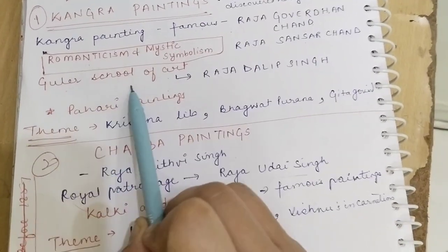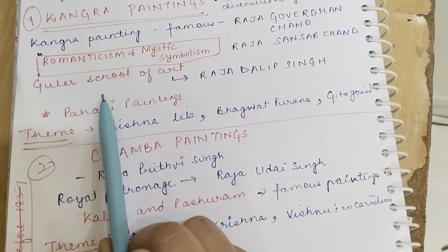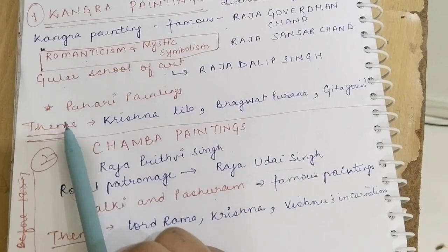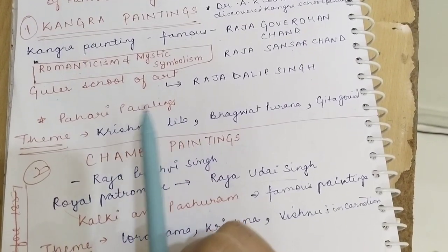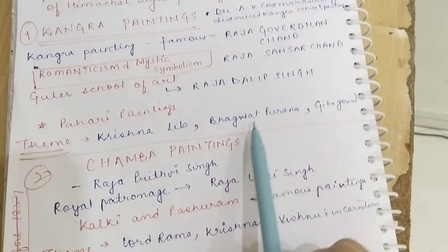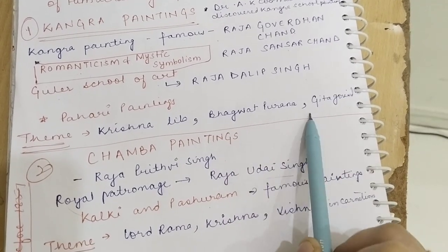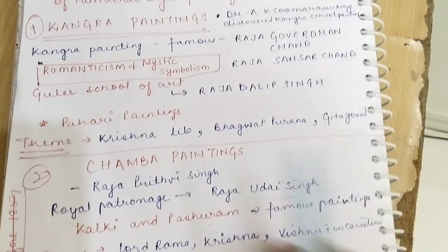The school of art was inaugurated by Raja Dilip Singh, and the painting of Raja Prithvi Singh is famous. The themes are Krishna Lila, Bhagwat Purana, and Gita Govind, which was written by Jayadeva.